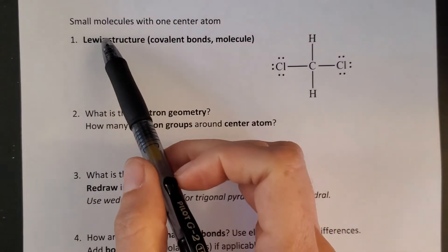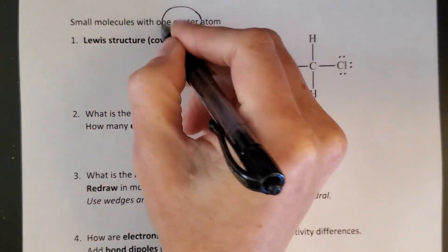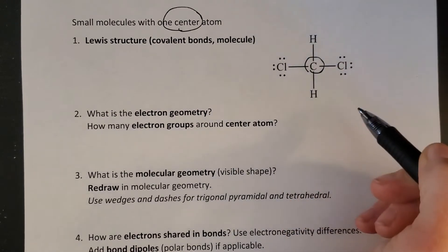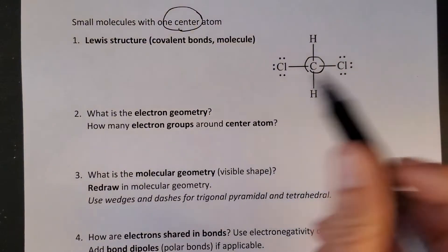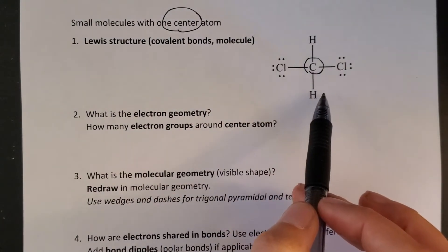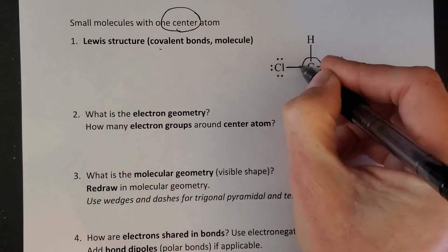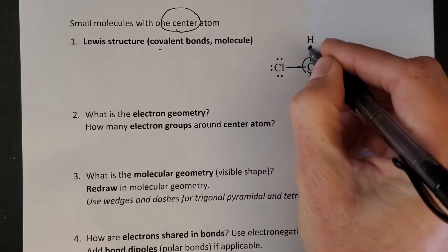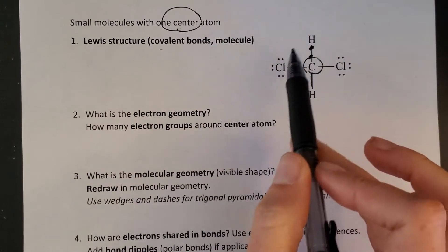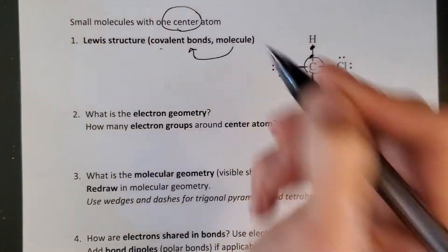We're going to take a look at all the different things you can do with small molecules with one center atom. This would be, for example, our center atom carbon. First you need to be able to draw a Lewis structure which has been done for you, and then remember that every one of these bonds is a covalent bond, so it's shared electrons, two electrons shared. I would refer to this whole compound as a molecule. So molecules contain covalent bonds.